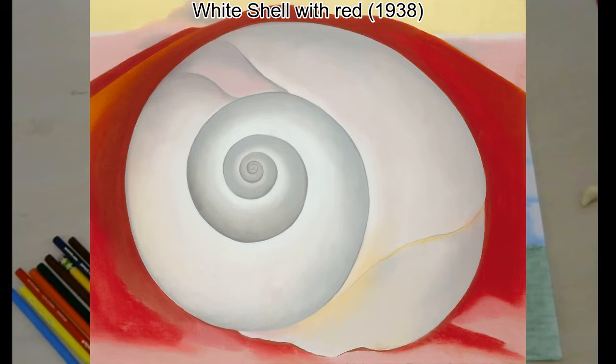She did a painting that looked a lot like this. It's called Red Hill on White Shell. Do you think the background here is supposed to be the desert too? Do you think the desert is a good backdrop for a shell?